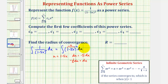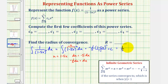Integrating, we get -1/5 times u to the power of negative one, which gives (1 - 5x)^(-1) divided by negative one, plus c. Simplifying, we have positive 1/5 times 1/(1 - 5x) plus c. Notice how 1/(1 - 5x) fits the form of the formula for the sum of a converging geometric series.